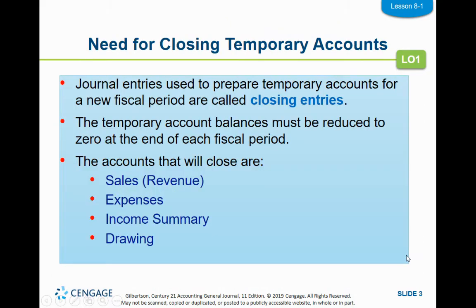Closing entries are journal entries that we use to prepare those accounts for the next fiscal period. The temporary accounts will be zeroed out at the end of each fiscal period. The accounts we're going to close out are revenue, sales, expenses, and we're finally going to use the income summary account that we've had on the worksheet. We're going to use it now, along with our drawing account.